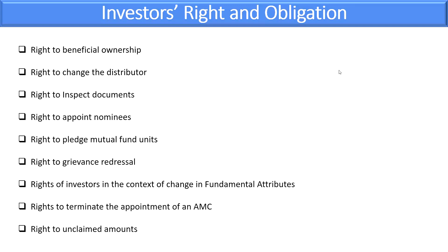Regarding the right to unclaimed dividends — sometimes investors' addresses or bank accounts change and they don't update with their AMC, resulting in unclaimed amounts. As per SEBI, AMCs must report unclaimed amounts and total number of investors for each scheme in their annual reports. Investors can reclaim this amount: if claimed within 3 years, they get the prevailing NAV at the time of reclaim; if claimed after 3 years, they get the NAV applicable after the 3-year period.